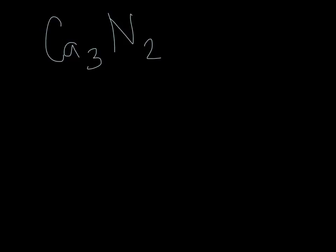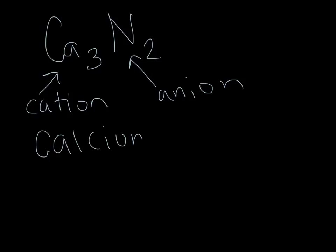Now I need to name it. I have my cation, I have my anion. Our cation we name by just writing the name. Our anion we name by using our stem, nitr, and then we add our ide ending. So I have nitride. So the name of my compound I created was calcium nitride.